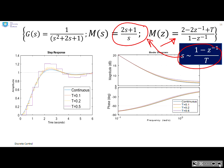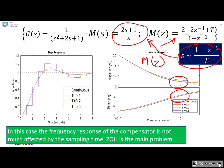So for this example you have a look and you say, well actually, if I look at the phase plots and the gain plots of the compensator—so this Bode diagram is just for M(z)—actually they're fairly similar. So in this case the frequency response of the compensator is not much affected by the sampling time. And the differences in performance here are largely caused by the zero-order hold, not by the mapping of the compensator.